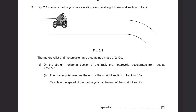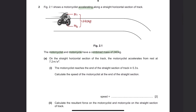Question 2: Figure 2.1 shows a motorcyclist accelerating along a straight horizontal section of track. The motorcyclist and motorcycle have a combined mass of 240 kg. Question A: On the straight horizontal section of the track, the motorcyclist accelerates from rest at 7.2 meters per second squared.